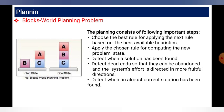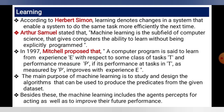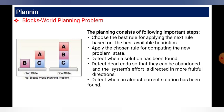Planning consists of the following important steps: first, choose the best rule to apply next based on the best available heuristic data; second, apply the chosen rule for computing the new problem state; third, detect when a solution has been found; fourth, detect dead ends so they can be avoided and effort directed in more fruitful directions; fifth, detect when an almost correct solution has been found.